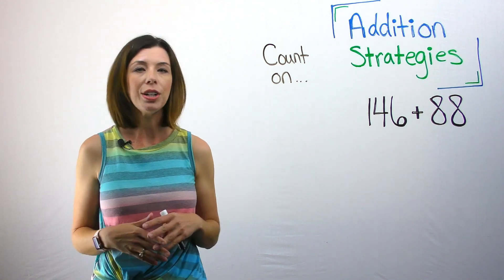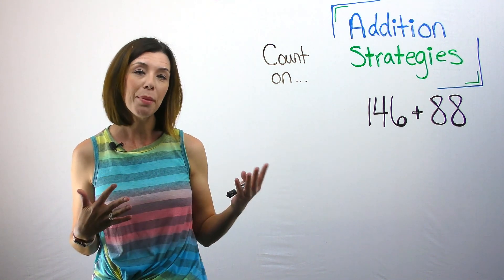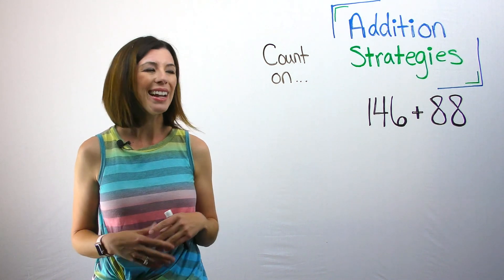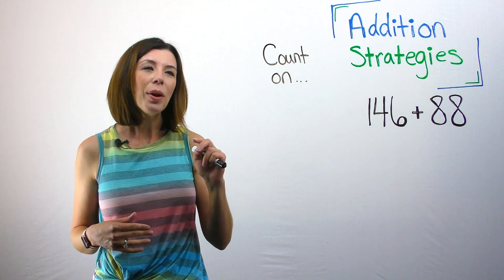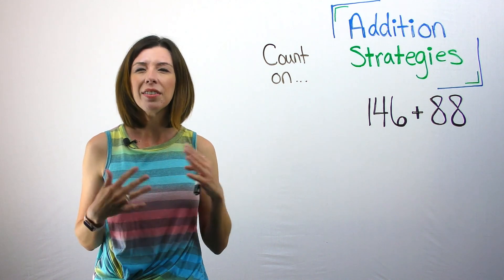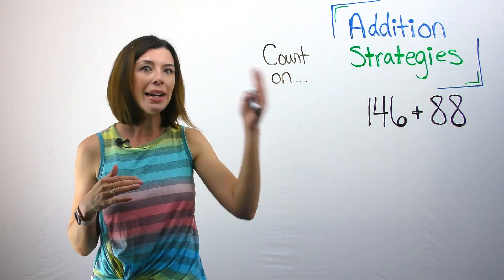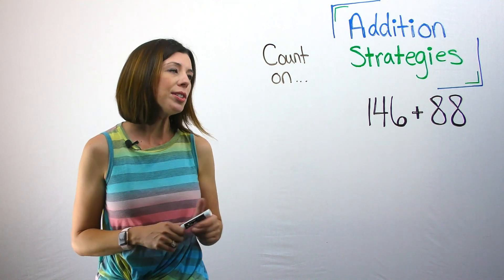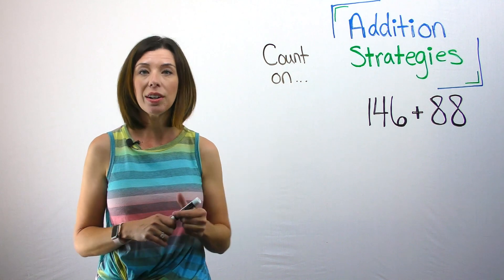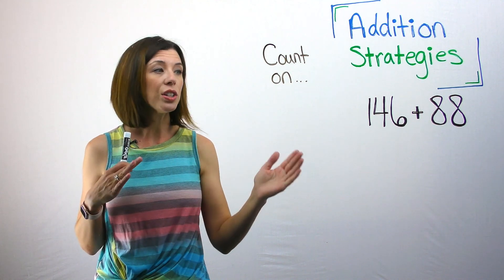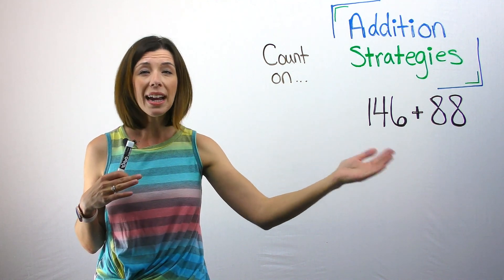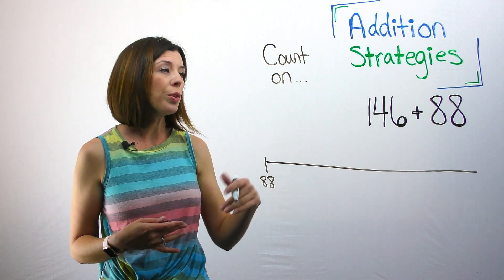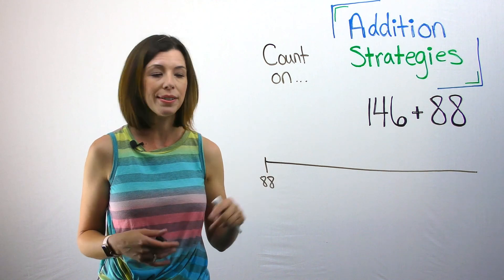So the beauty of the count on strategy is you can use an open number line to show your work. Now you might be thinking, what's an open number line? It's basically a line where I call them hops, where we hop on it and they're not proportionate. So a giant hop could be five or it could be 100. So they label it. I'm going to first start by taking 88 and starting there. Know that you can start at 146 or 88. So either addend.